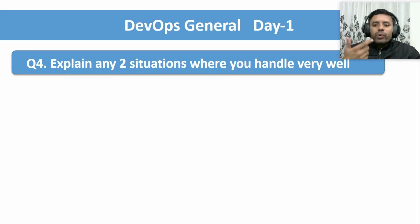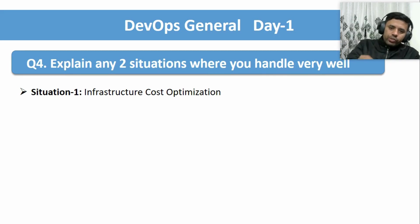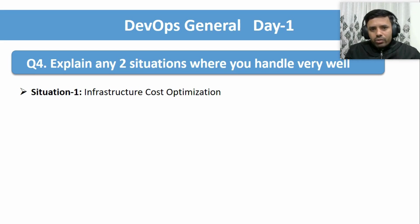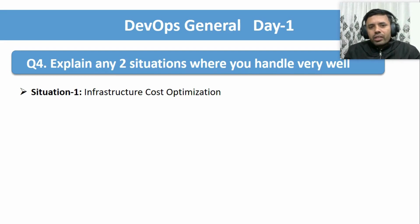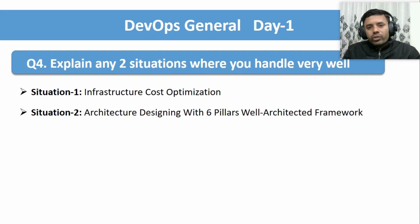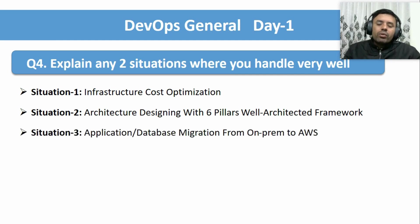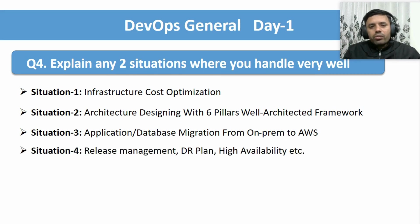The fourth question is: 'Explain any two situations where you handled something very well.' Some interview panels may ask this. I'm giving just two situations as examples, but you can explain one or more depending on the panel. Situation one: infrastructure cost optimization — explain how you saved infrastructure costs for the benefit of the organization. Situation two: architecture design using the six-pillar Well-Architected Framework — how you architected a secure and fault-tolerant system. Situation three: application or database migration from on-premises to AWS, GCP, or Azure. Situation four: release management, DR plan, or high availability setup.